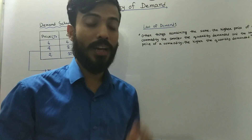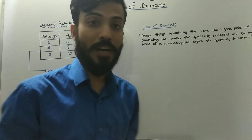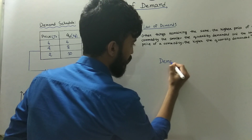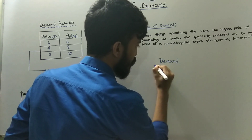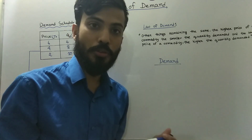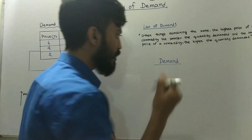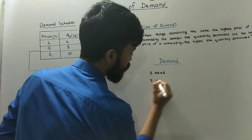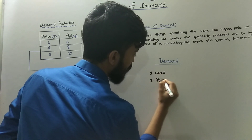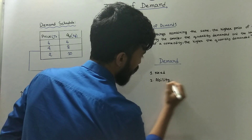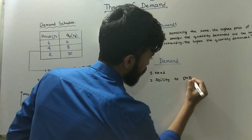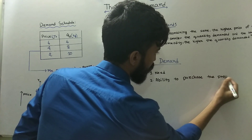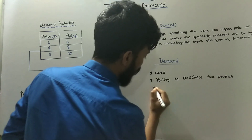I am going to talk about demand. The definition of demand has three elements. The first element is need. The second element is ability to purchase the product. The third element is willingness.